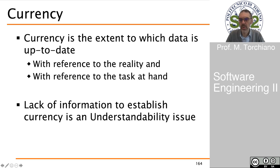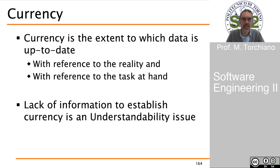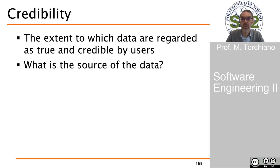It is not always possible to determine whether data is up to date, and the lack of this information is a problem for understandability — we are not able to understand whether the data is the one we actually need. Credibility is the extent to which data can be regarded as true and credible by the user; in general this is a matter of understanding the source of the data so that we can assess whether it comes from a credible source.